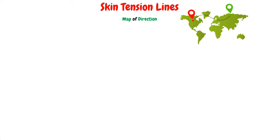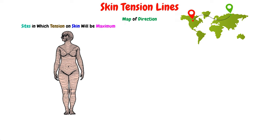The simplest definition of skin tension lines is that these lines represent a map of direction. In this map, there will be an illustration of the sides of regions in which the tension on the skin will be at its maximum. These virtual lines are usually drawn on a diagram of a human body.